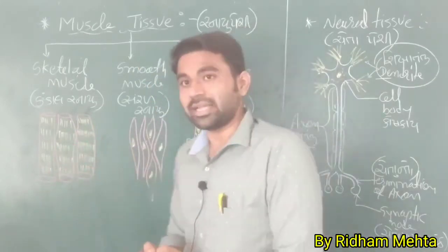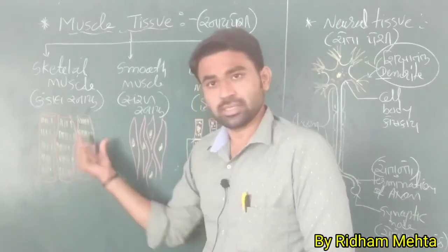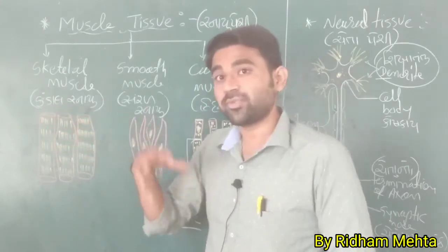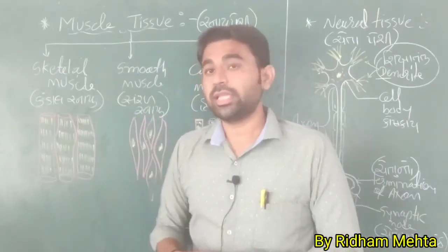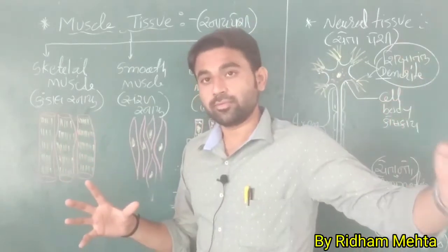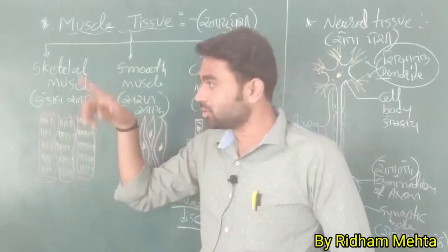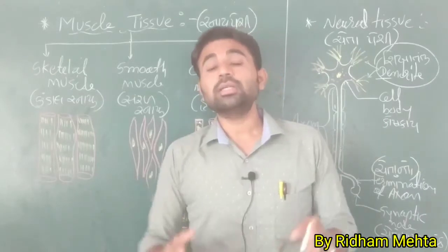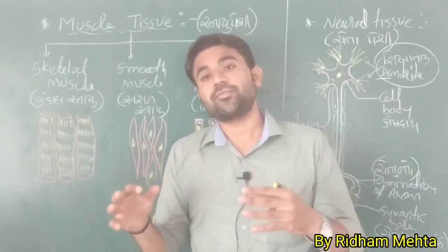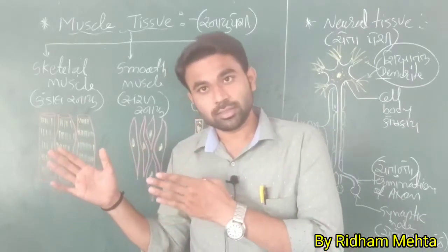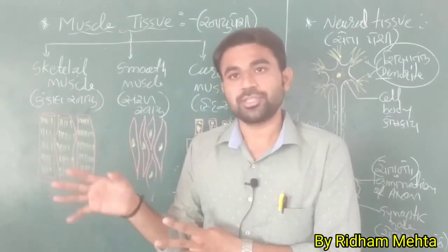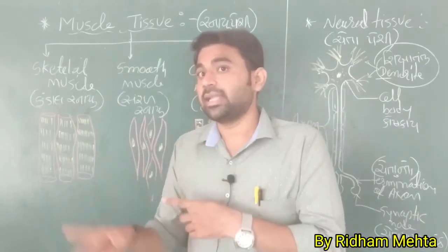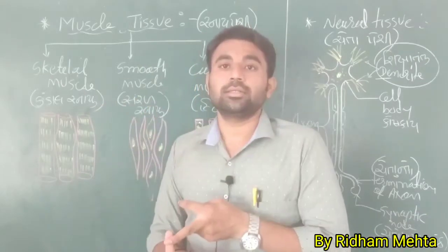Looking at the structure of skeletal muscles, there are muscle fibers with proteinous stripes. The protein fibers are arranged in a particular manner, so if you see the diagram you can observe stripes on them. That's why they are called striated muscles. So skeletal muscles have three names: skeletal muscles, voluntary muscles, and striated muscles.